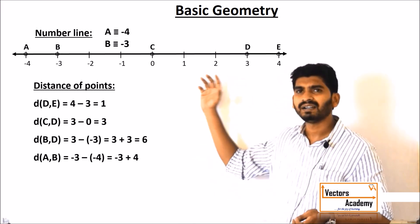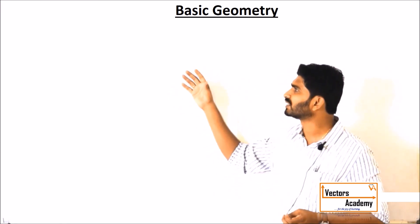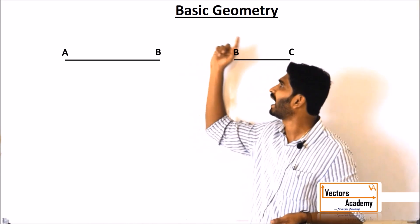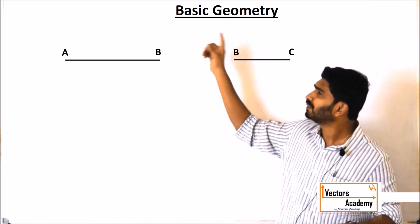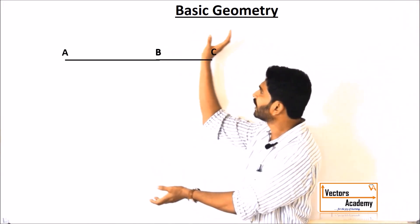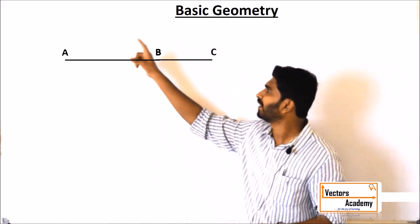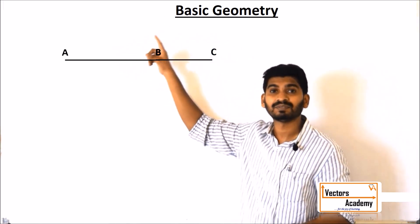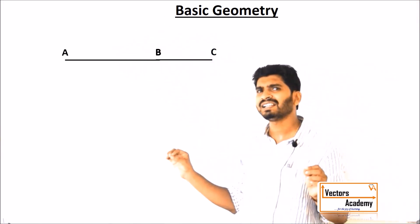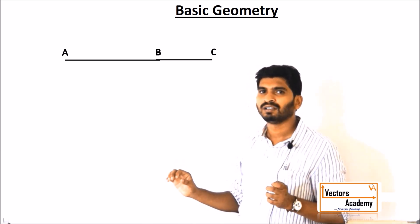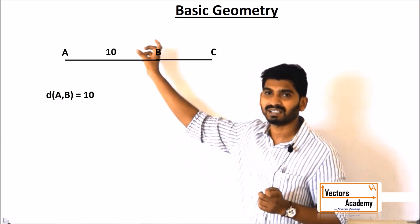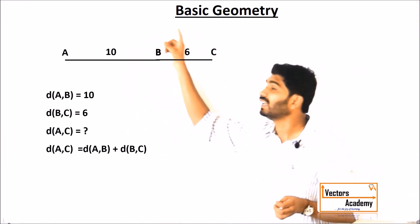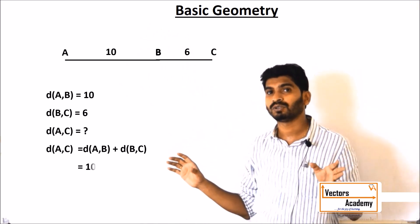Now once you have understood this, you can look at the next concept of addition of segments. How do we add different segments? Consider these two segments AB and BC. You can see point B is the common point, so we can combine these two segments and we get a larger segment that is AC. Exactly in the same way we add the measurements as well. If the measurement of AB is 10 and the measurement of BC is 6, so 10 plus 6 — the measurement of AC will be equal to 16.